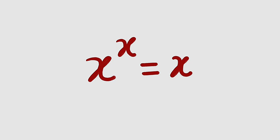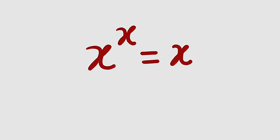By inspection, you can see that x equal to 1 is a valid solution because 1 raised to the power of 1 is exactly equal to 1, no doubt about it. But is x equal to 1 the only valid solution? Let us find out.